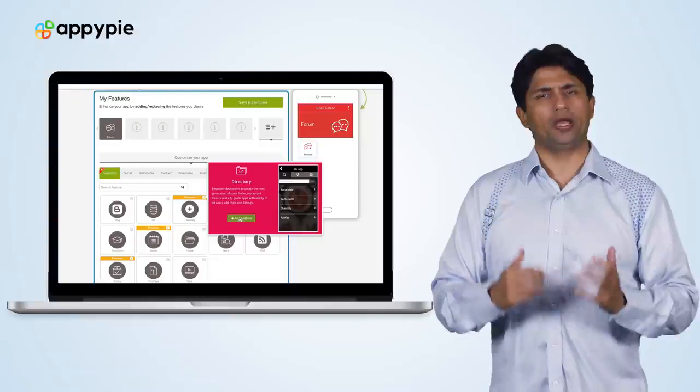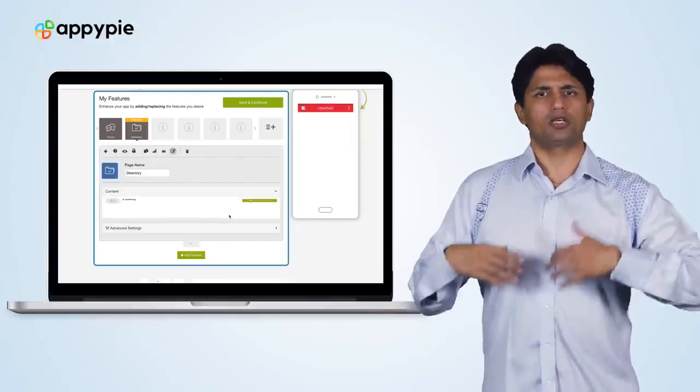Once you add the directory feature into your website builder, it allows you to categorize different properties. You could have a buy category, a sell category, or a rent category. You can create different categories and underneath each category you can add multiple listings of properties.